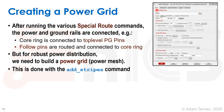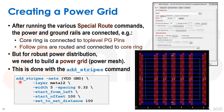The add_stripes form has a lot of options. For example, we can add M2 stripes that go along our design. What we want these stripes to do is connect at the top and bottom to the ring in M1, and we want it to drop vias every time the VDD stripe goes over the VDD follow pin, and every time the ground stripe goes over the ground follow pin. This is what the add_stripes command does automatically.